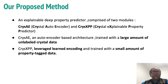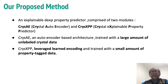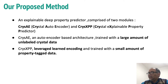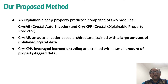Our proposed model comprises two modules: CRIS-AE, a crystal autoencoder, and CRIS-XPP, a crystal explainable property predictor. CRIS-AE is an autoencoder-based architecture trained with a large amount of unlabeled crystal data, causing the deep encoding model to capture all important structural and chemical information of the constituent atoms of the crystal graph. This learned encoding is then leveraged to build the property predictor CRIS-XPP, to which the knowledge acquired by the encoder is transferred and further trained with a small amount of property-tagged data, largely mitigating the need for a huge tagged dataset.